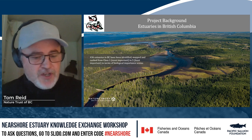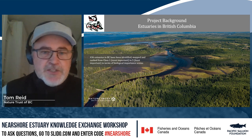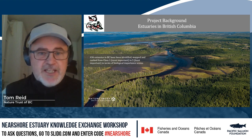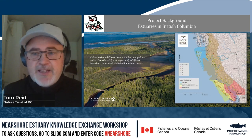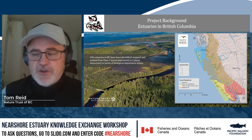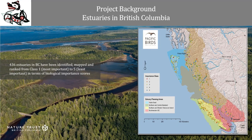One of the things we've worked on in this partnership program is to identify and map all the estuaries in BC. Over the years, partners in the Pacific Bird Habitat Joint Venture — including the Nature Trust, Environment Canada, CWS, and others — have worked to identify all estuaries on the coast. This map shows the locations of these sites. They've been classified by importance from class one to five, with class one being most important. Class ones include the Fraser River and the Skeena, and there are a few on Vancouver Island as well.